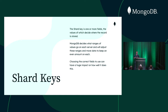Those ranges can change over time. MongoDB can make the ranges smaller, it can split them, and it can actually move them about and move the documents between servers. But an important point is that choosing the correct field to use can have a huge impact on the performance of your system. This is the question of how do I choose my shard key — how do I choose which fields in my data I should use to divide the data up between the different servers.